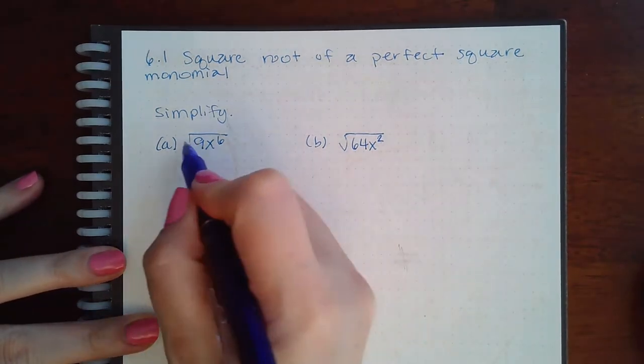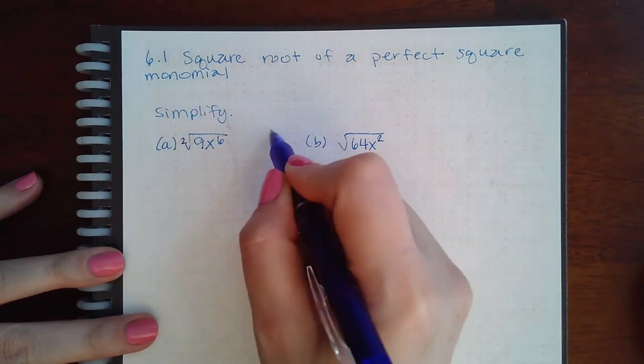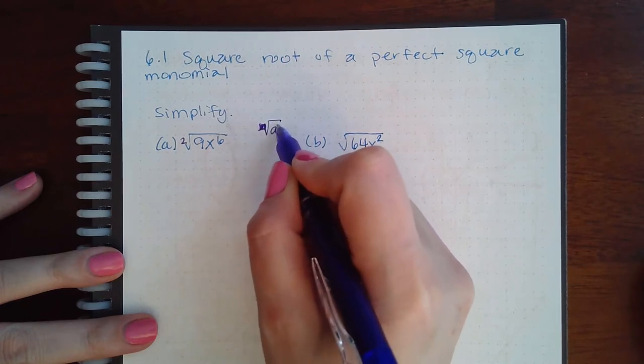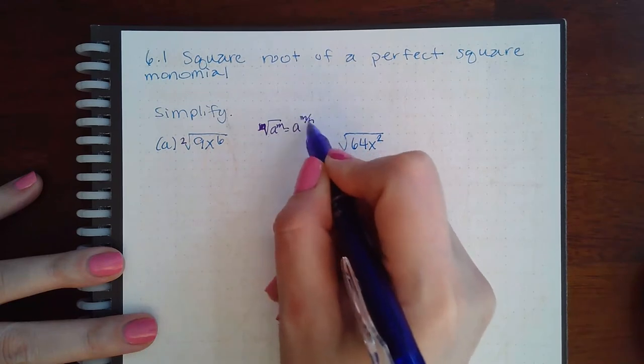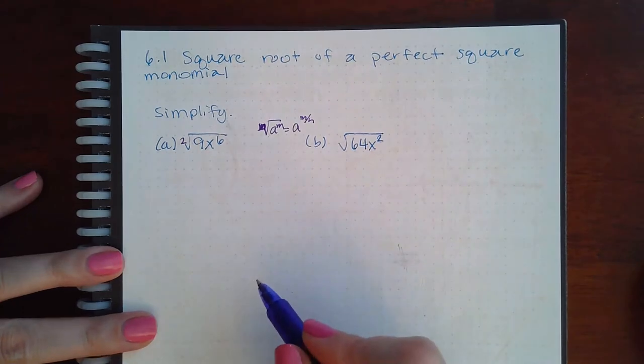And so if you remember, all we're doing is taking this index and dividing it by that. When we use this rule to become this, we're just dividing those exponents. And it's the inside exponent divided by the outside exponent.